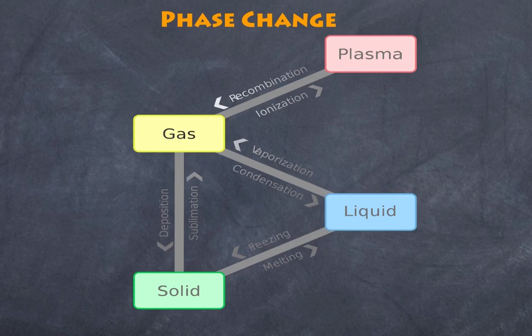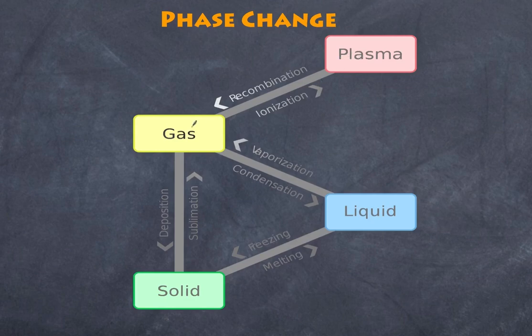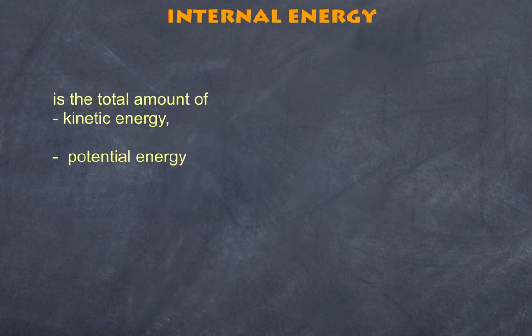Before we discuss latent heat, let's remind ourselves of the concept of phase and how matter can exist in one of five phases. The most common four are solid, liquid, gas, and plasma — the missing one is the Bose-Einstein condensate. If you put energy in, a solid melts to a liquid, vaporizes to a gas, and ionizes to a plasma. The reverse also applies, and you also have sublimation — for example, solid carbon dioxide goes straight into a gas.